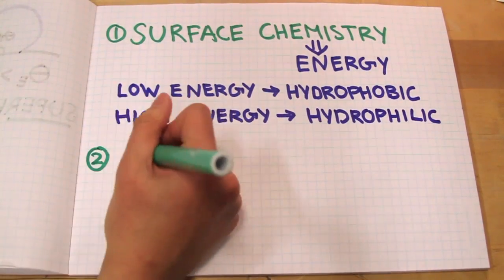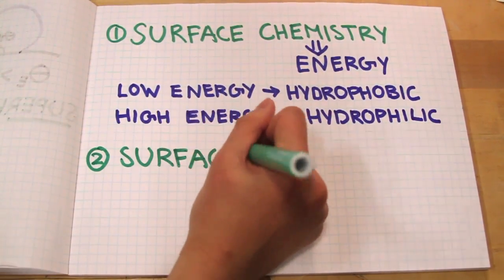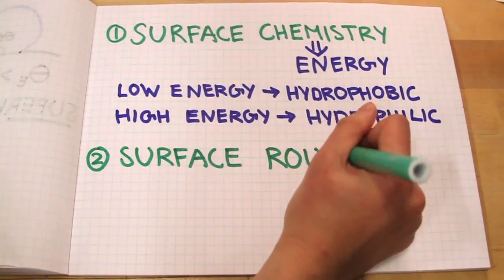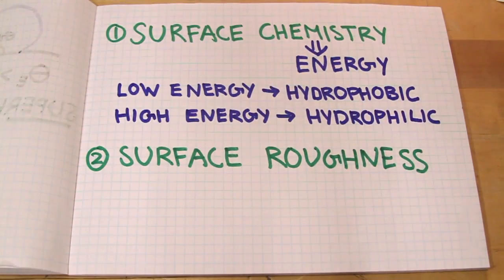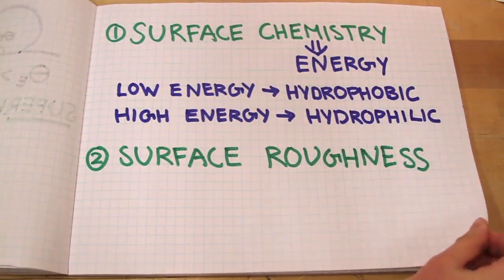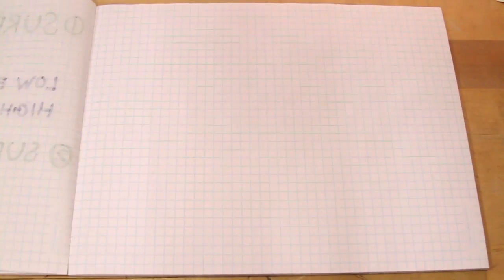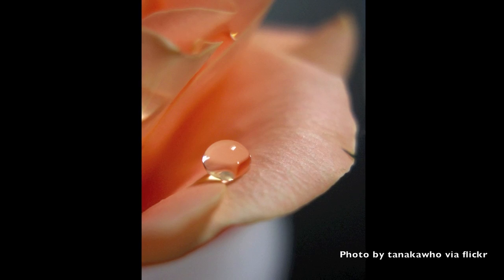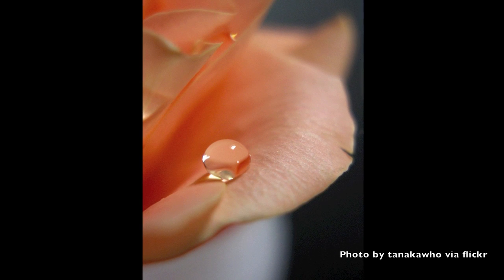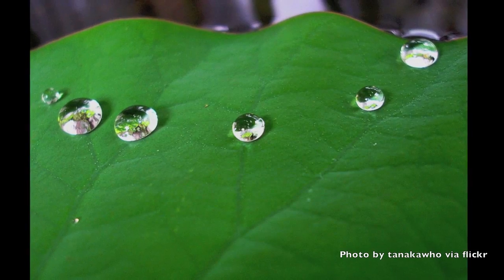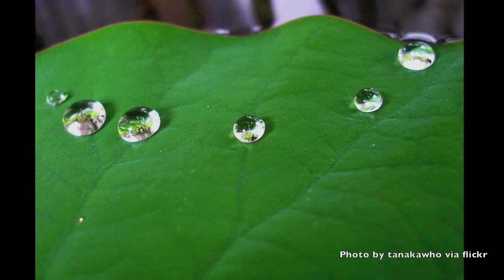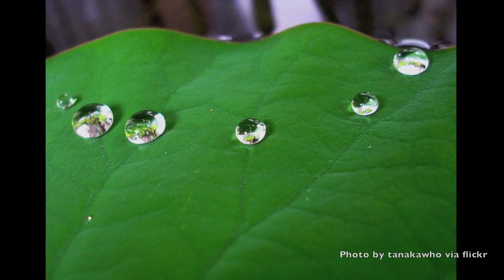The second factor is surface roughness. In general, surface roughness will make a hydrophobic surface even more hydrophobic, and a hydrophilic surface even more hydrophilic. Scientists have been studying what kinds of tiny structures make surfaces superhydrophobic or superhydrophilic, looking at examples in nature such as the lotus leaf to obtain these special properties.